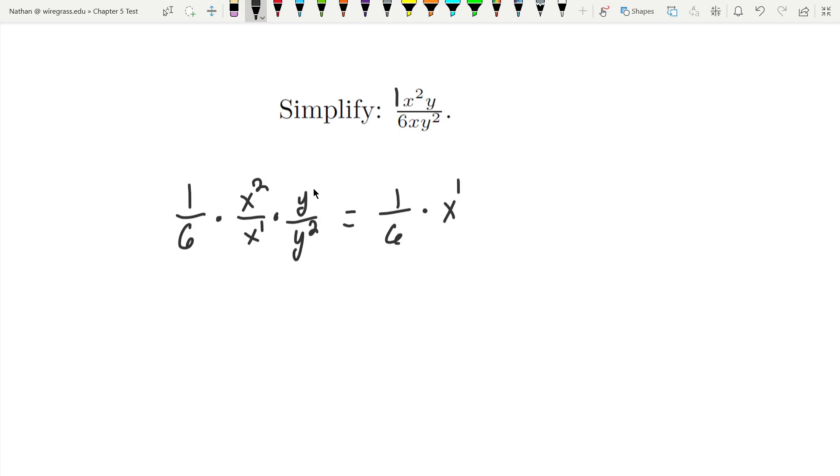And here we're going to have y to the one over y squared, so one minus two going to be y to the negative one. And a positive exponent like this means it's going to stay in the numerator, and for this one a negative exponent means it moves to the denominator.